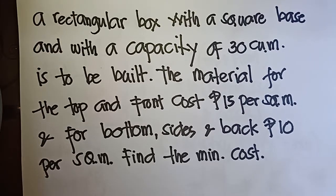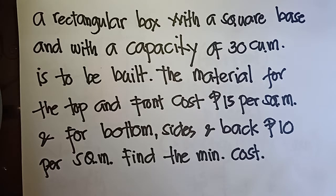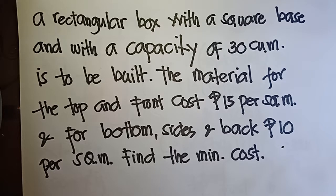The next example: a rectangular box with a square base and a capacity of 30 cubic meters is to be built. The material for the top and front costs 15 per square meter, and for the bottom, sides, and back, 10 per square meter. Find the minimum cost.